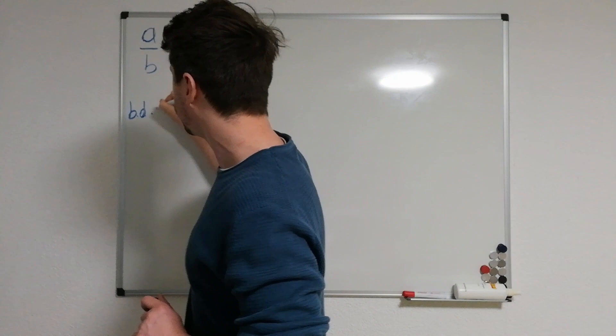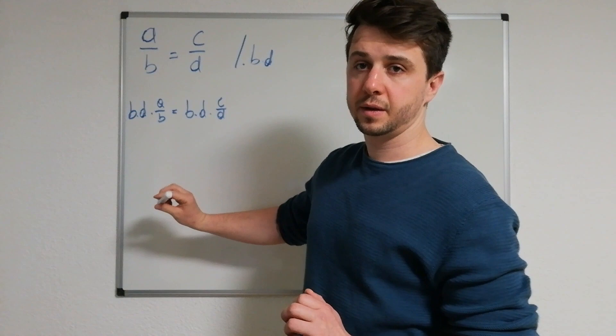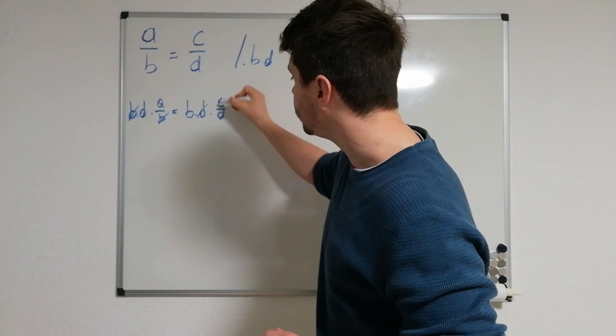And since we've got now b divided by b, we can cut those b's, and over here we can cut those d's, and we simply get a times d equals b times c.